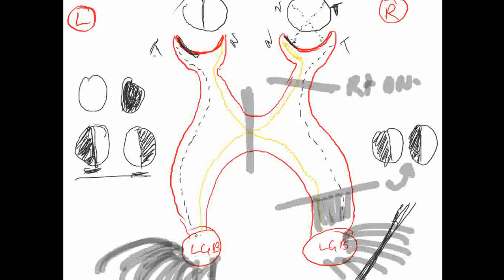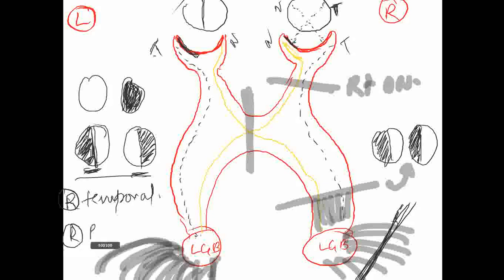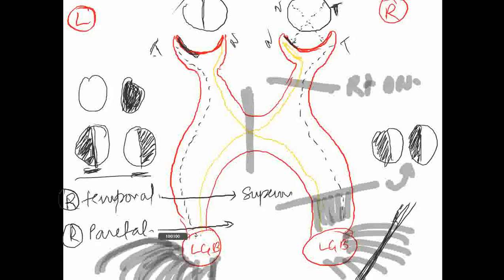Suppose the right temporal lobe fibers are gone, and suppose the right parietal lobe is affected. Temporal will give upper quadrant loss and parietal will give lower quadrant loss. Temporal results in superior quadrantopia, parietal in inferior. Remember: temporal is superior, parietal is inferior.